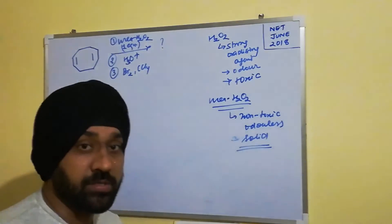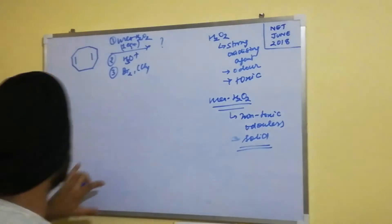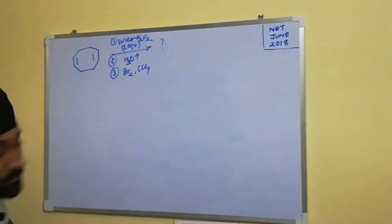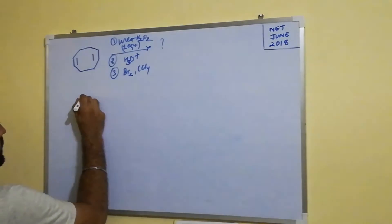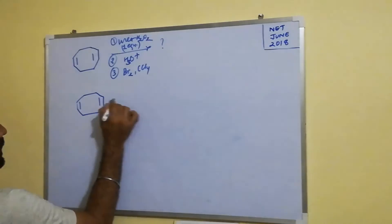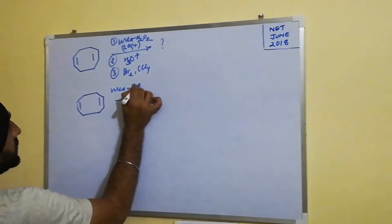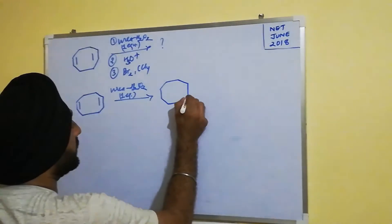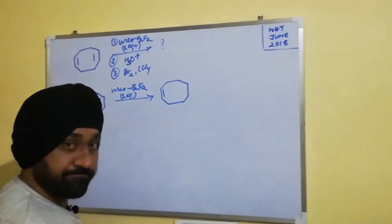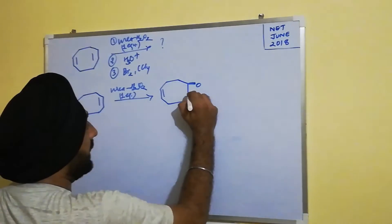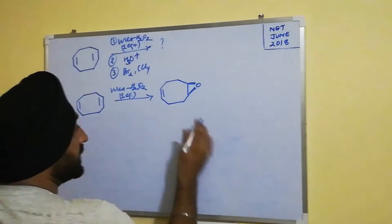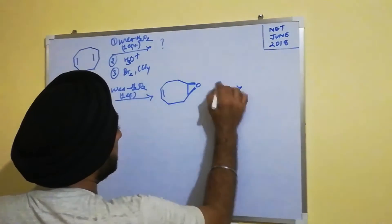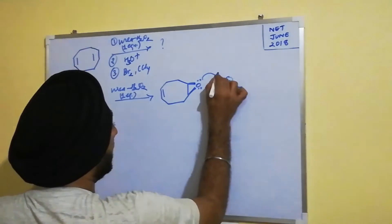Since we are using only one equivalent, it causes epoxidation of only one double bond. After the epoxidation with urea-H₂O₂ — and you can choose either dash or wedge bonds for the stereochemistry — in the next step the substrate is treated with acidic water. The lone pairs on the epoxide oxygen get protonated.